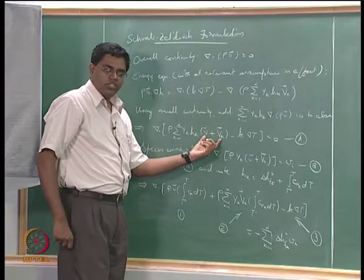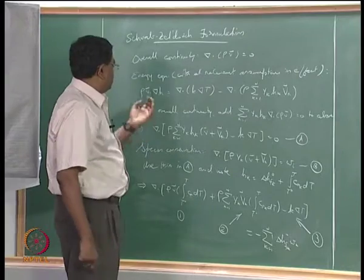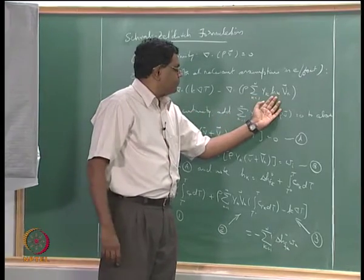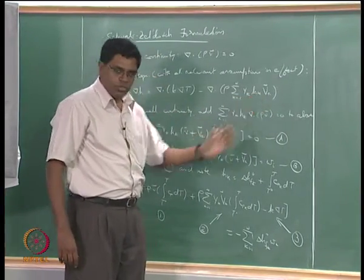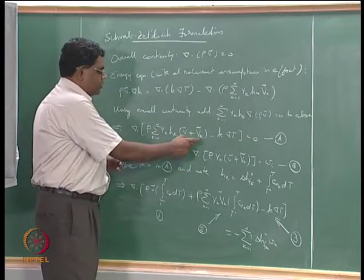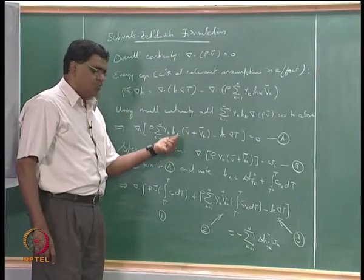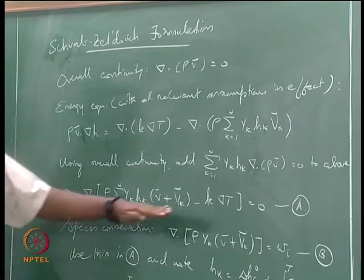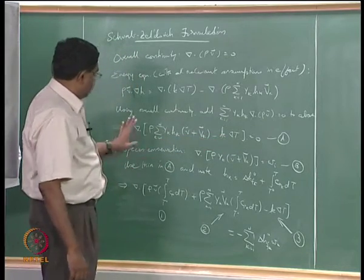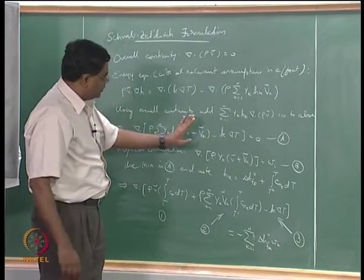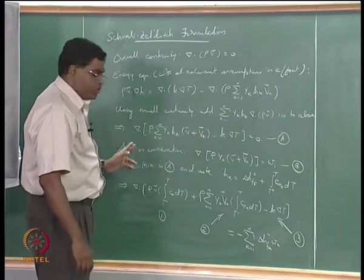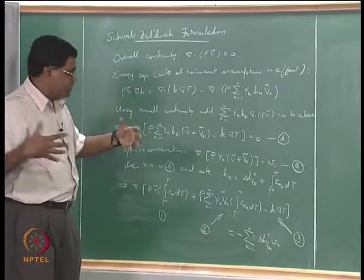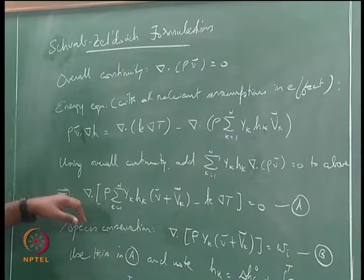This amounts to the species velocity. Recall this is the mixture-averaged convection of the mixture-averaged enthalpy, and this is actually the enthalpy convection due to diffusion. If you put these two together, this is like the species velocity convecting the species enthalpy. The divergence of both equals zero because when you have surface effects, Gauss's divergence theorem introduces this divergence here.